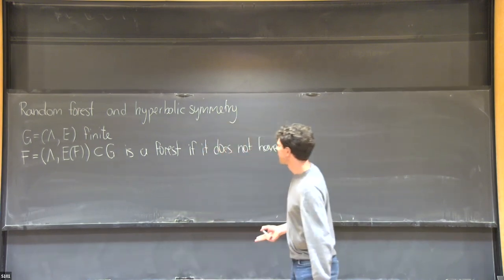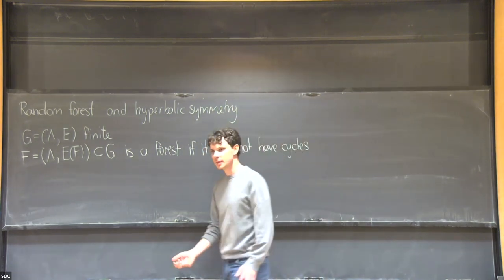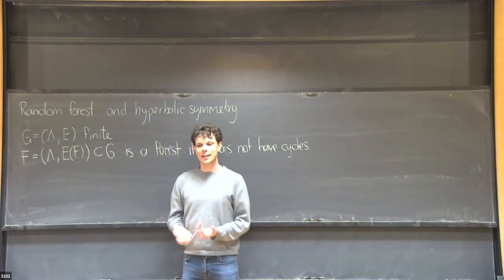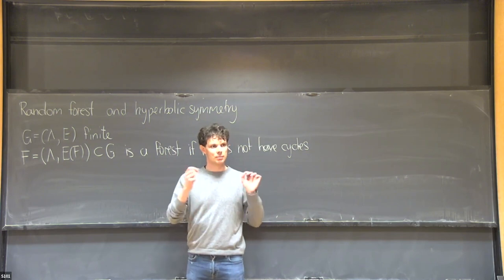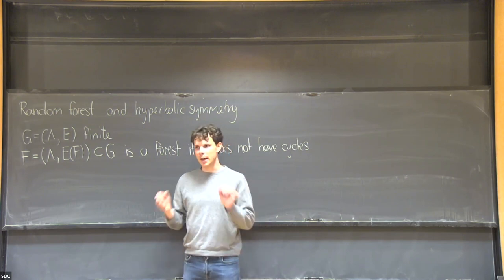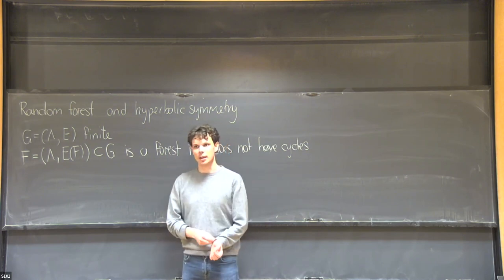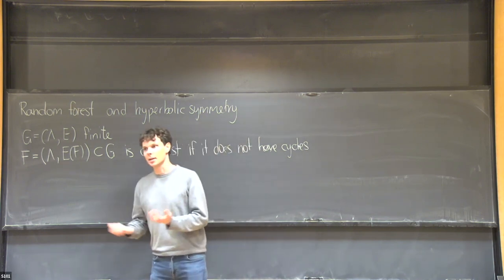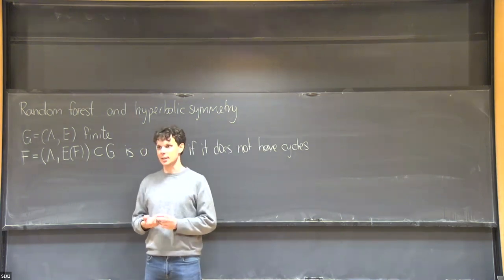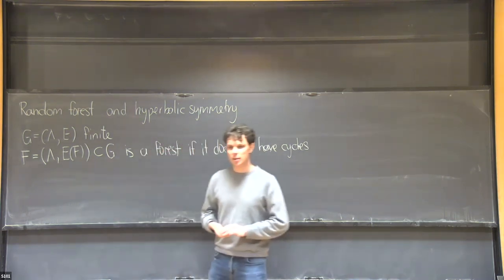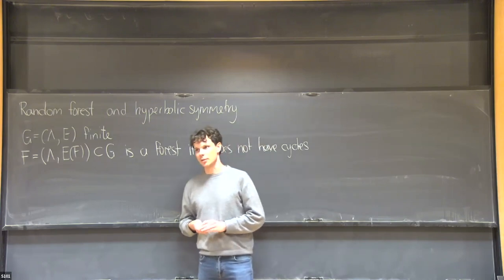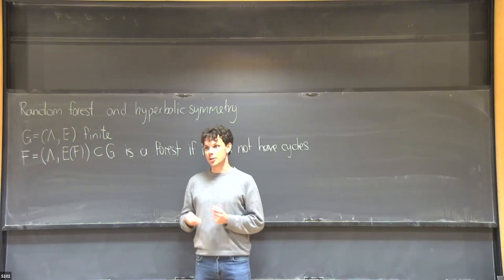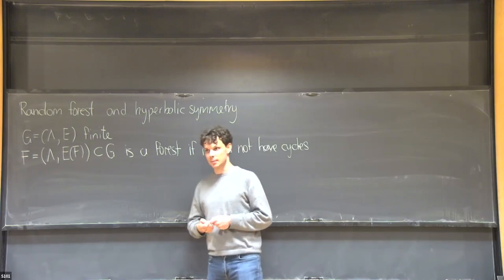In other words, a forest is one whose connected components are trees, but trees can be empty — you may have connected components with just a single vertex. There's another use of the word 'spanning forest' where every vertex is in an edge, which is not necessarily the case here.